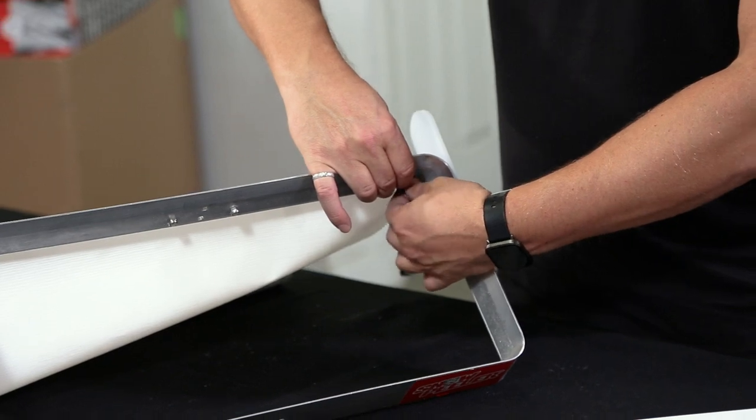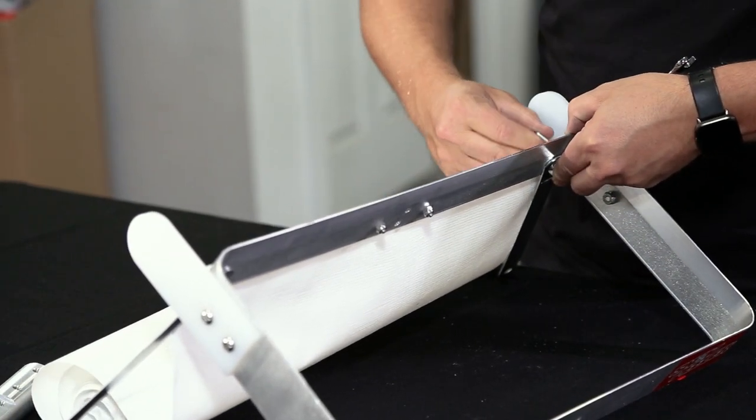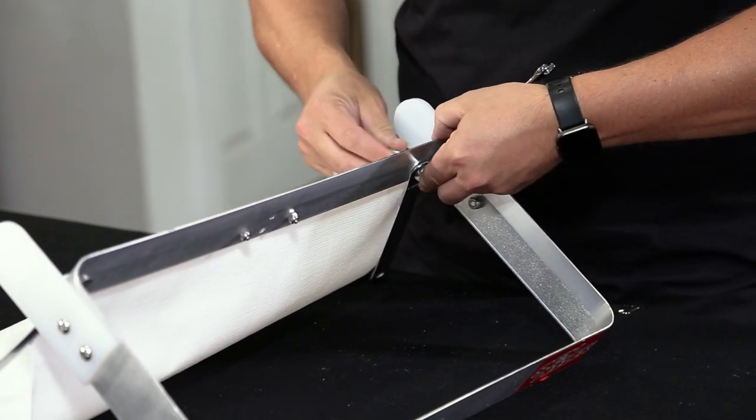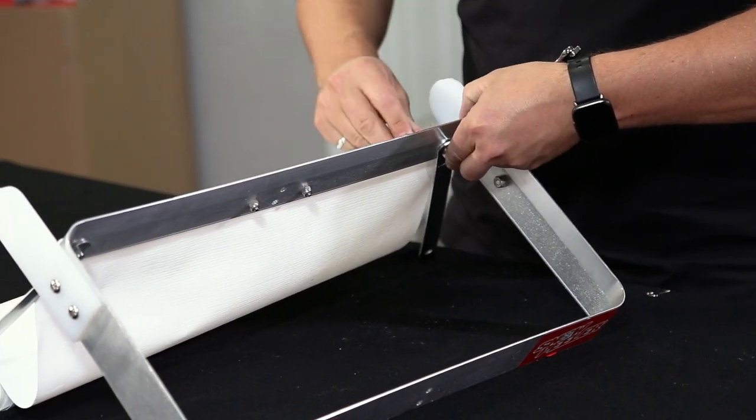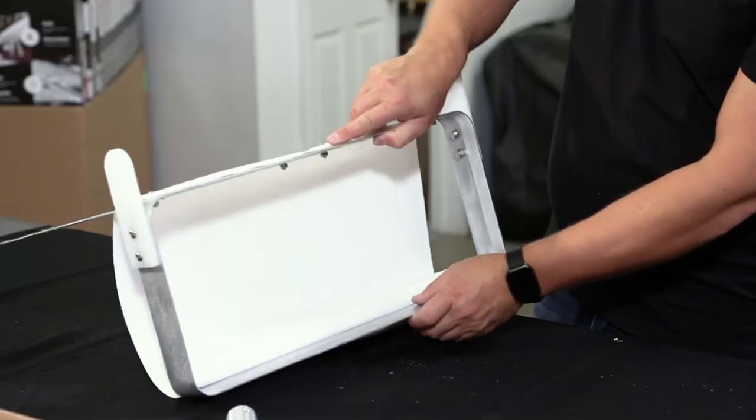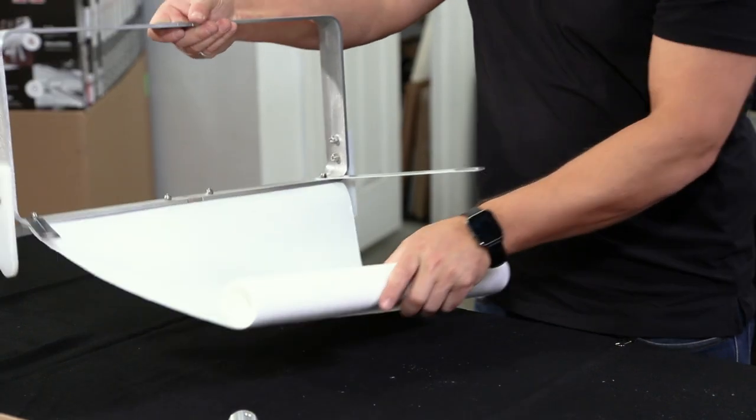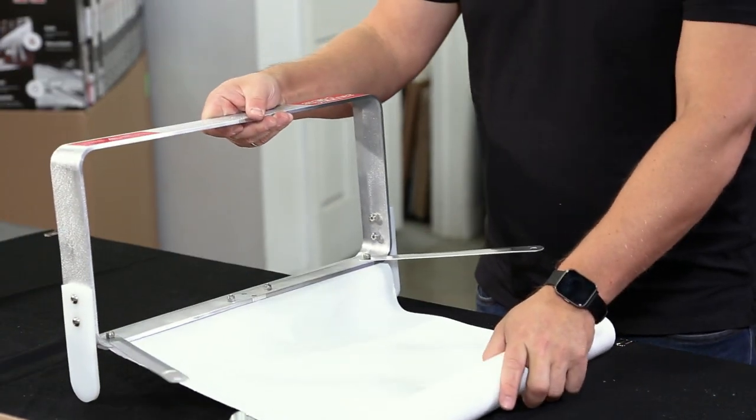To tighten the hex screws and the nylon lock nuts, you'll use the 3/32 inch hex key and an adjustable wrench. Once the mounting strips are installed, perform a quick inspection. Check that all the screws are tight. This completes the assembly of the cutting frame.